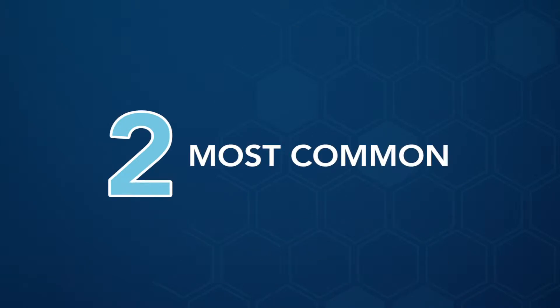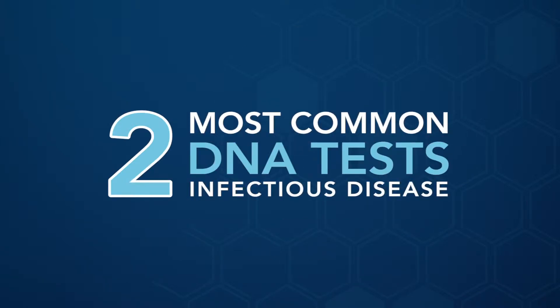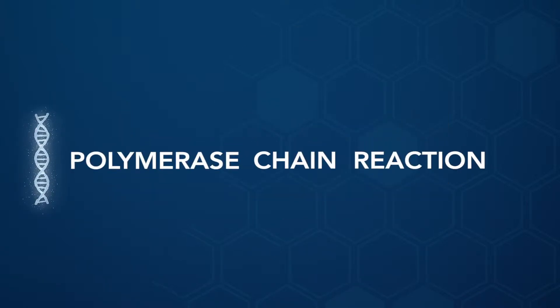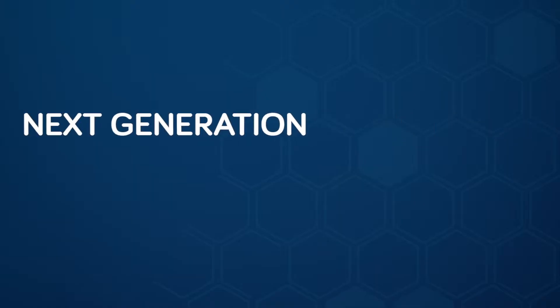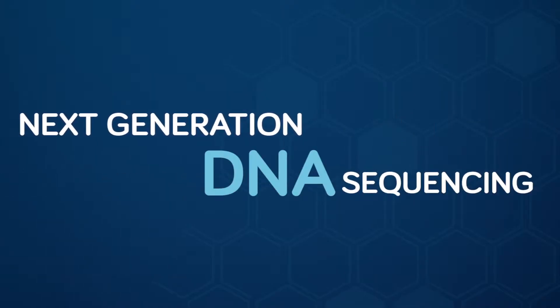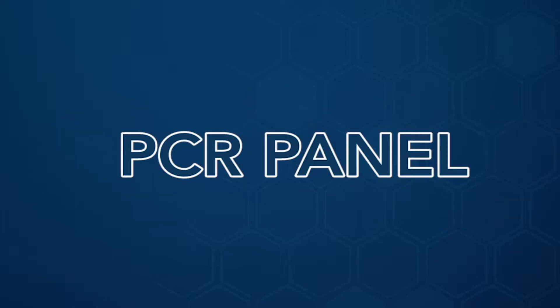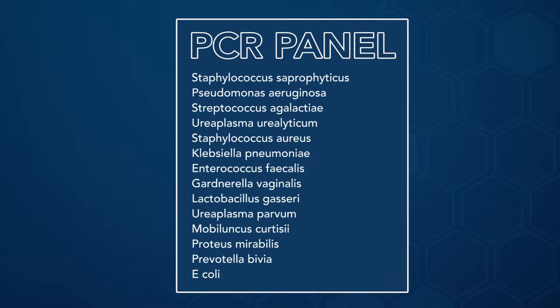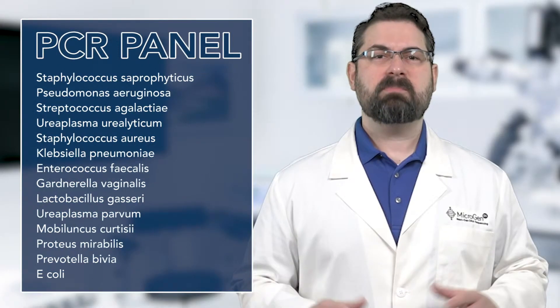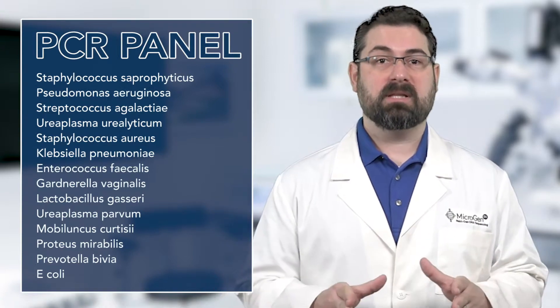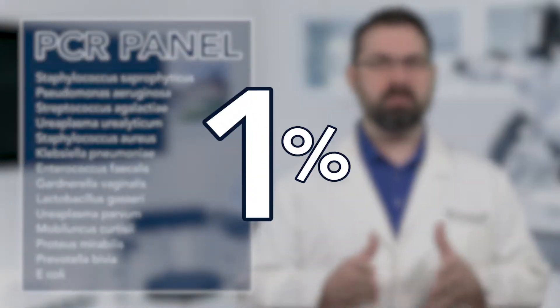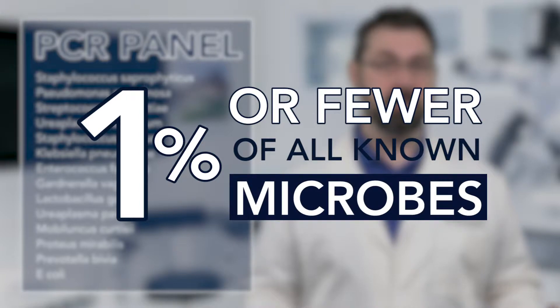The two most commonly used tests for infectious disease are polymerase chain reaction, also known as PCR, and a more advanced DNA test, next generation DNA sequencing, known as NGS. PCR compares the DNA in a sample against a panel of microbial species which are believed to be common pathogens in that area of infection. These panels are limited to a predetermined list of species which represent 1% or fewer of all known microbes.